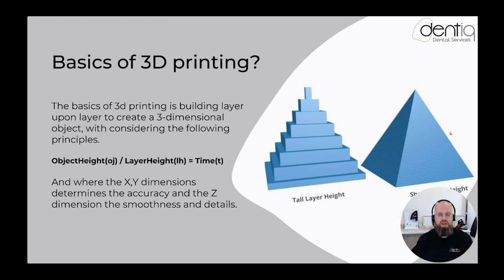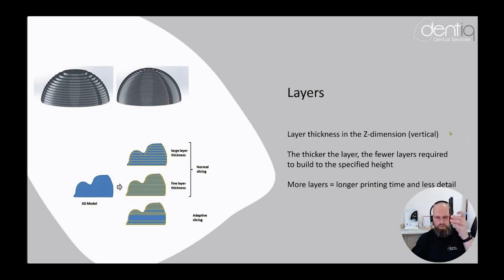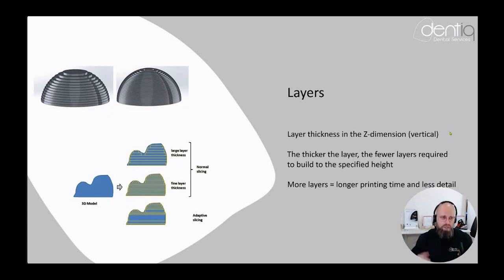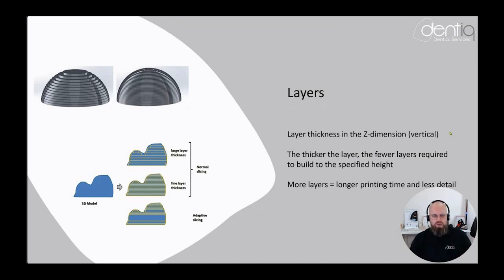As with a sphere or dome: the more layers, the smoother and more detailed the result. Another concept is adaptive slicing — instead of uniform layers, the first portions of the model (like the bottom of a dental model) are printed in large steps for speed, and only the detailed areas receive fine layers. This balances print time with precision where it matters most.